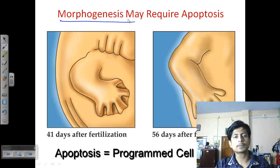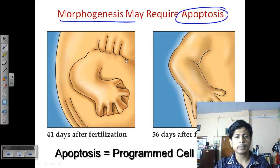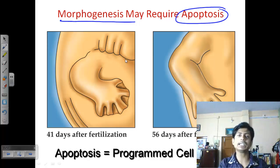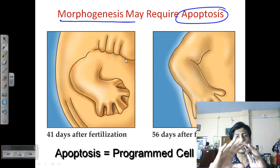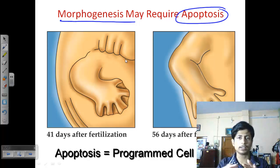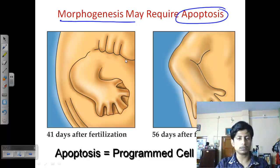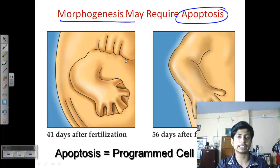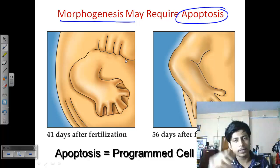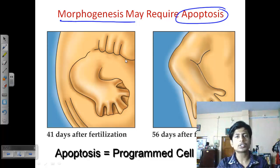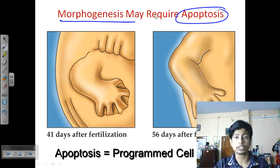Morphogenesis also requires apoptosis to work properly. During morphogenesis, sometimes you need to generate cells and sometimes you need to kill cells — it's like trimming. Using the analogy of clay: sometimes you add clay, sometimes you carve and remove some. During development, the deletion of cells relies on programmed cell death, or apoptosis.